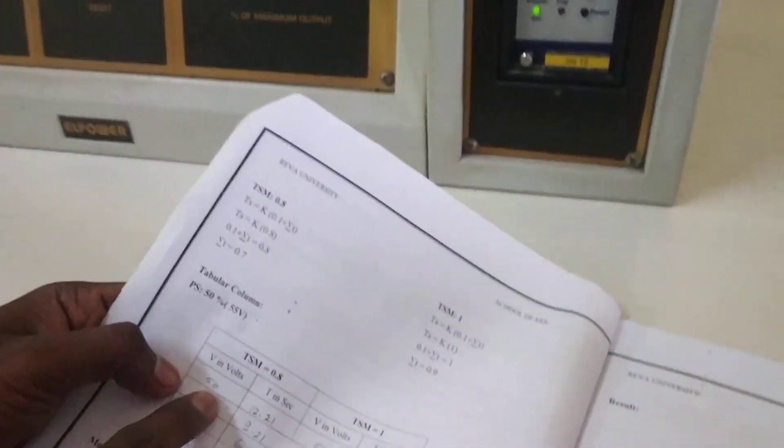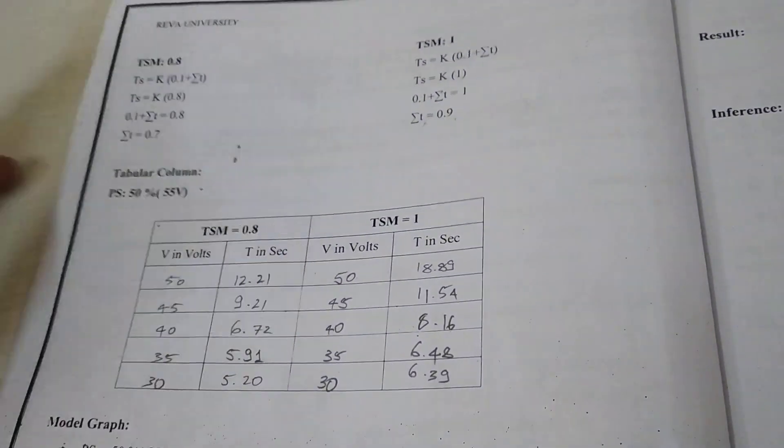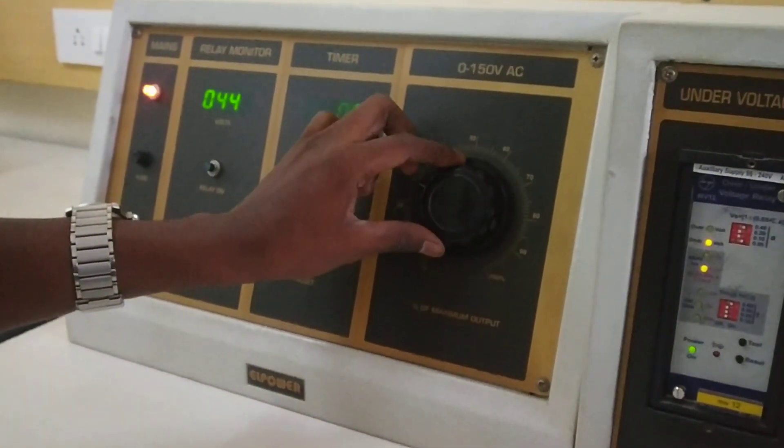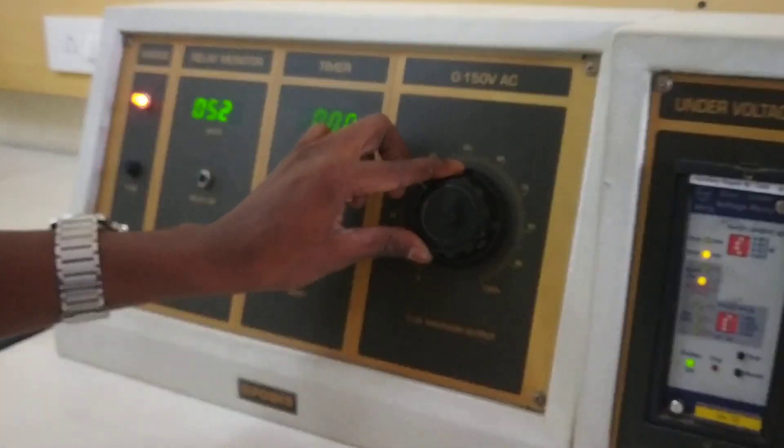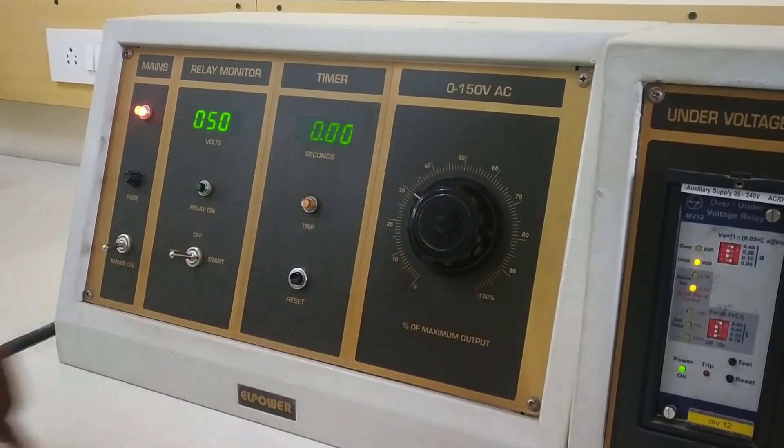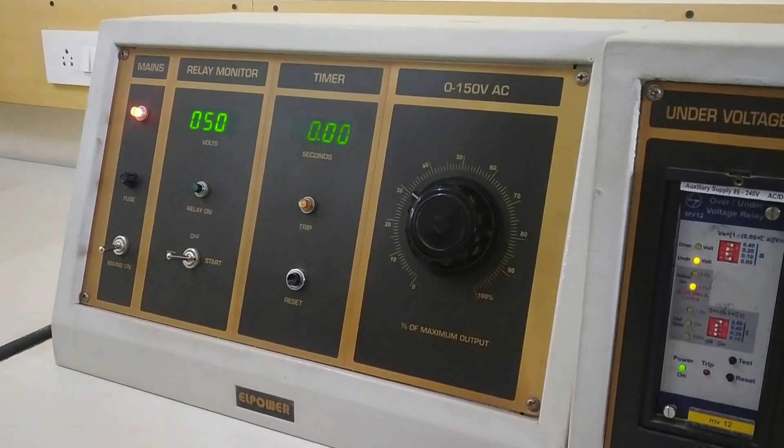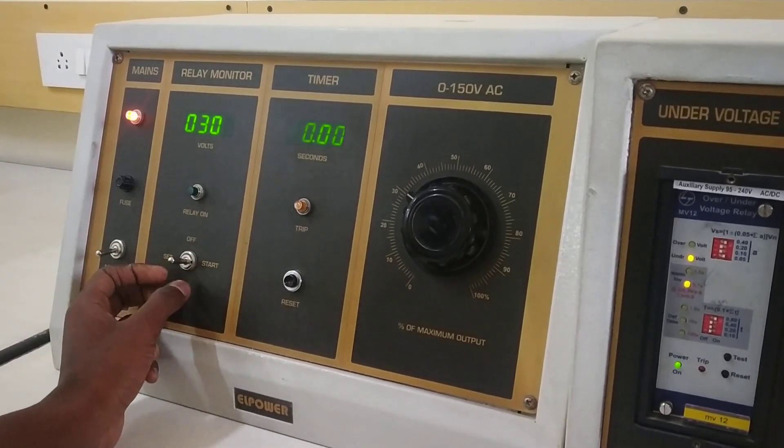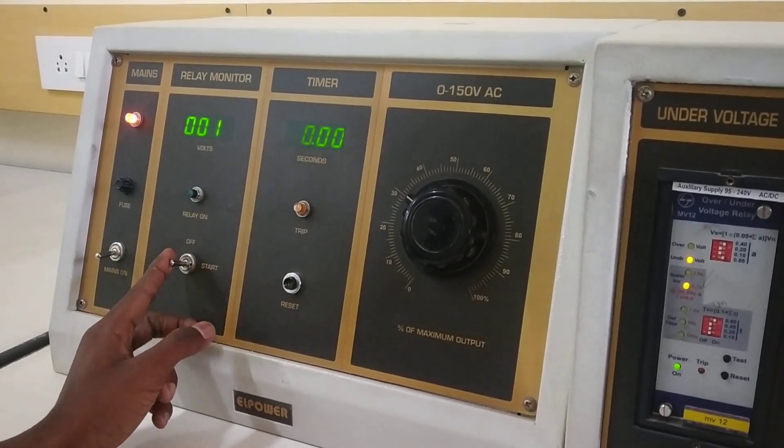First, what we do is we keep it to 50 volts. Once we keep it to 50 volts, we will bring it to OFF position. Then we will bring it to START.